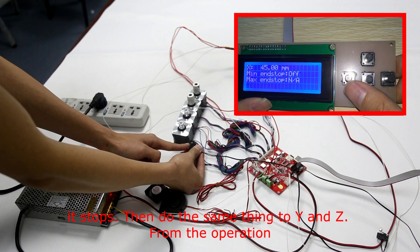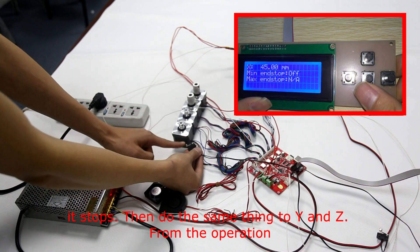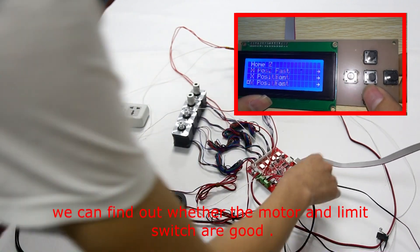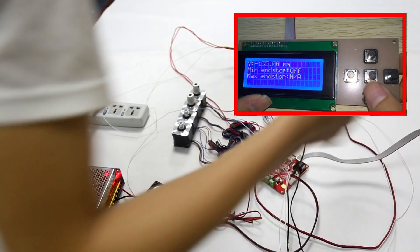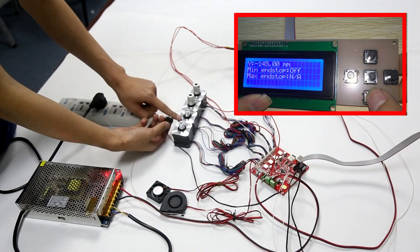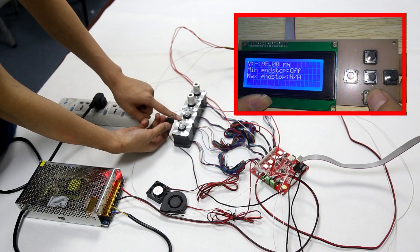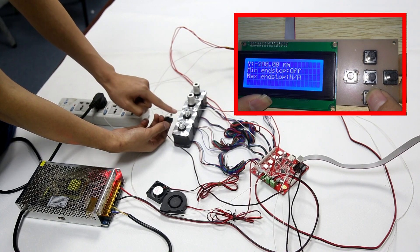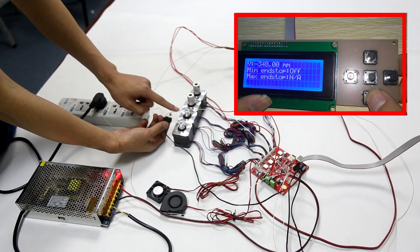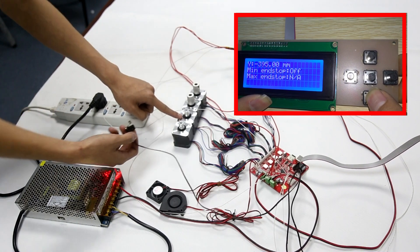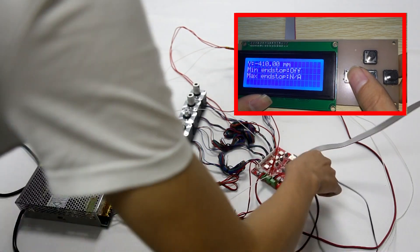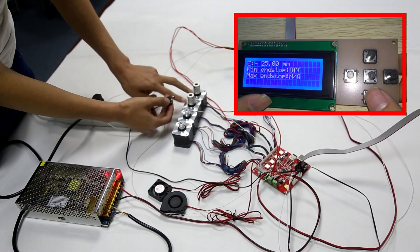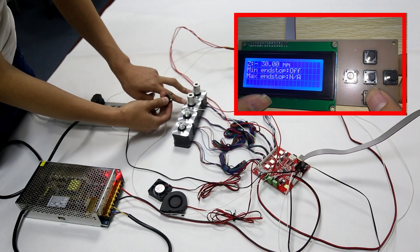Then, do the same thing to Y and Z. From the operation, we can find out whether the motor and the limit switch are good.